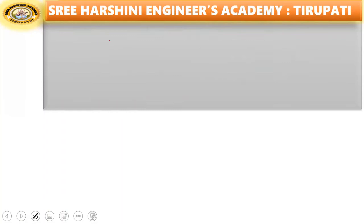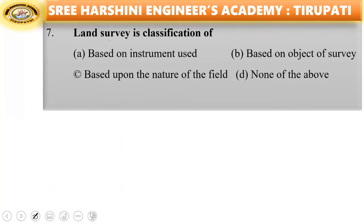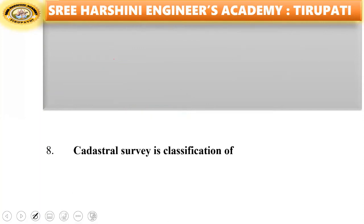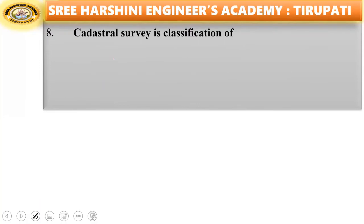Seventh question: land survey is a classification based on — instrument used, object of survey, nature of the field, none of the above. Option C is the right answer — land survey is a classification based on the nature of the field.